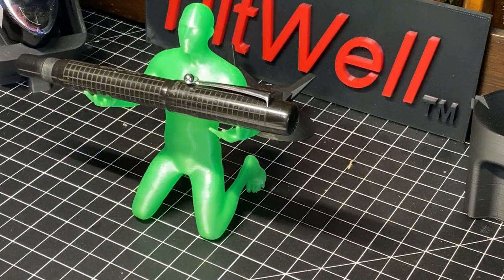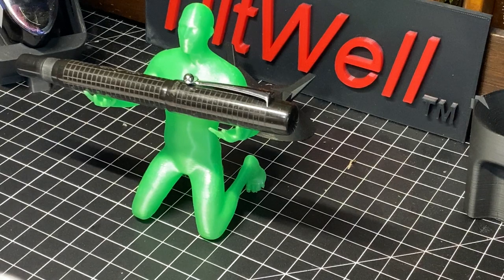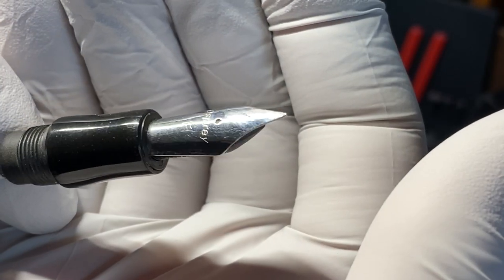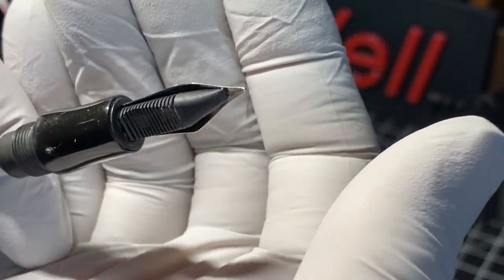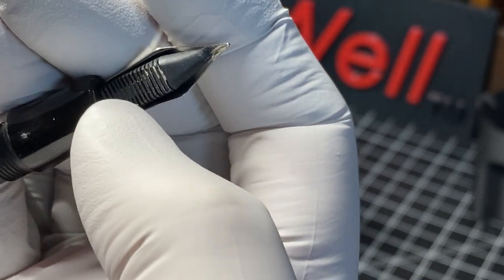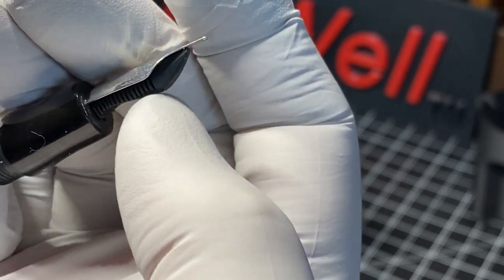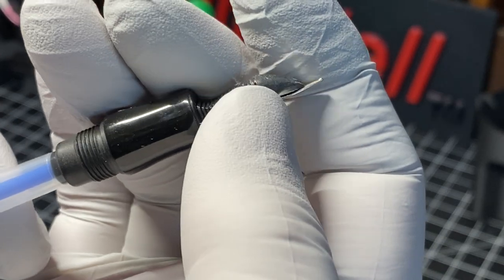But on to the pen. So, this one came with a fine steel nib. I haven't used it yet, but I will during this video. I'm pretty sure these are ebonite feeds, which is pretty cool.